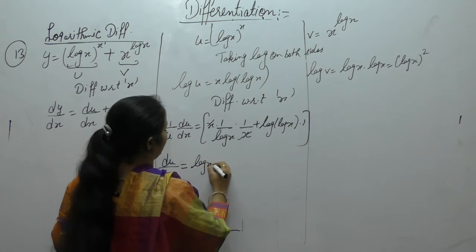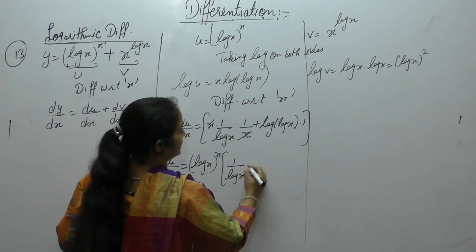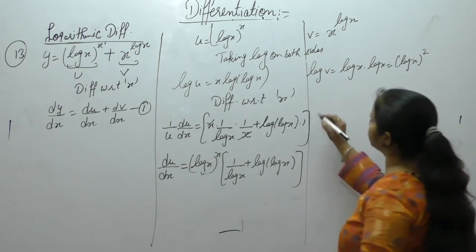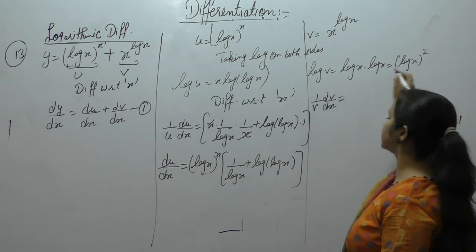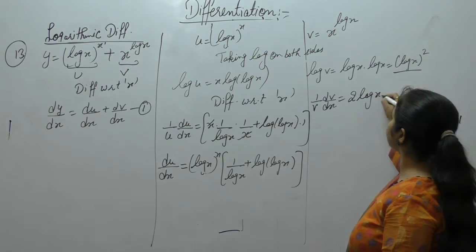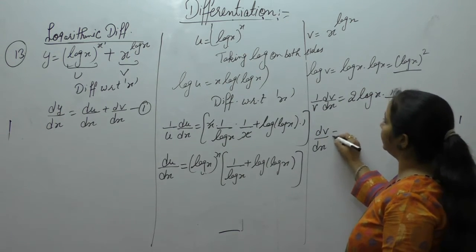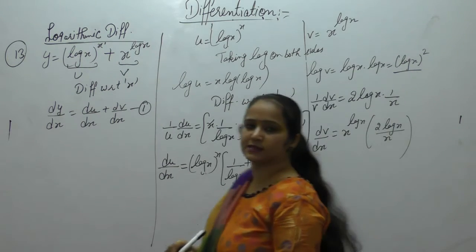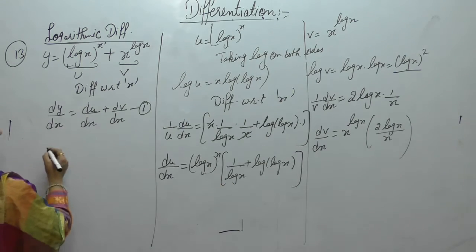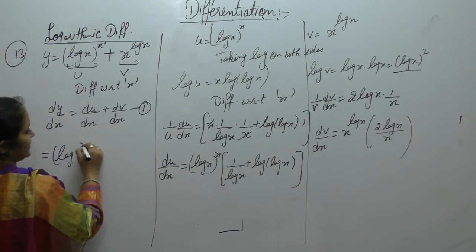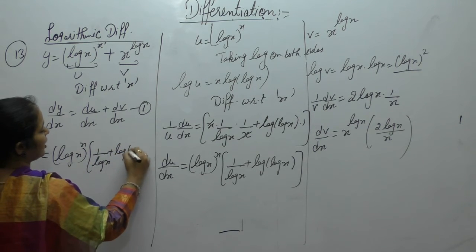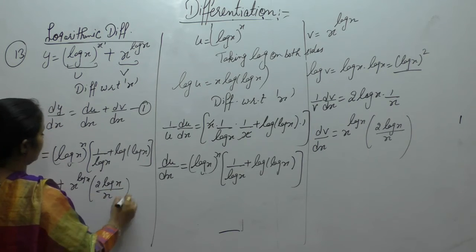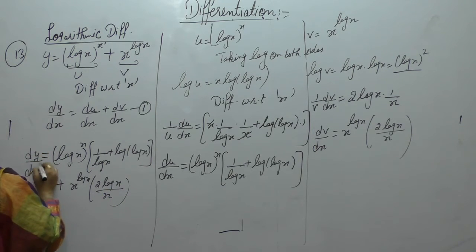u = log(x)^x, giving [1/log(x) + log(log x)]. Now differentiate log(v) = [log x]² with respect to x: 1/v · dv/dx = 2·log(x) · (1/x). So dv/dx = x^log(x) · 2·log(x)/x. Put the values of du/dx and dv/dx: dy/dx = log(x)^x · [1/log(x) + log(log x)] + x^log(x) · 2·log(x)/x. This is the value of dy/dx.